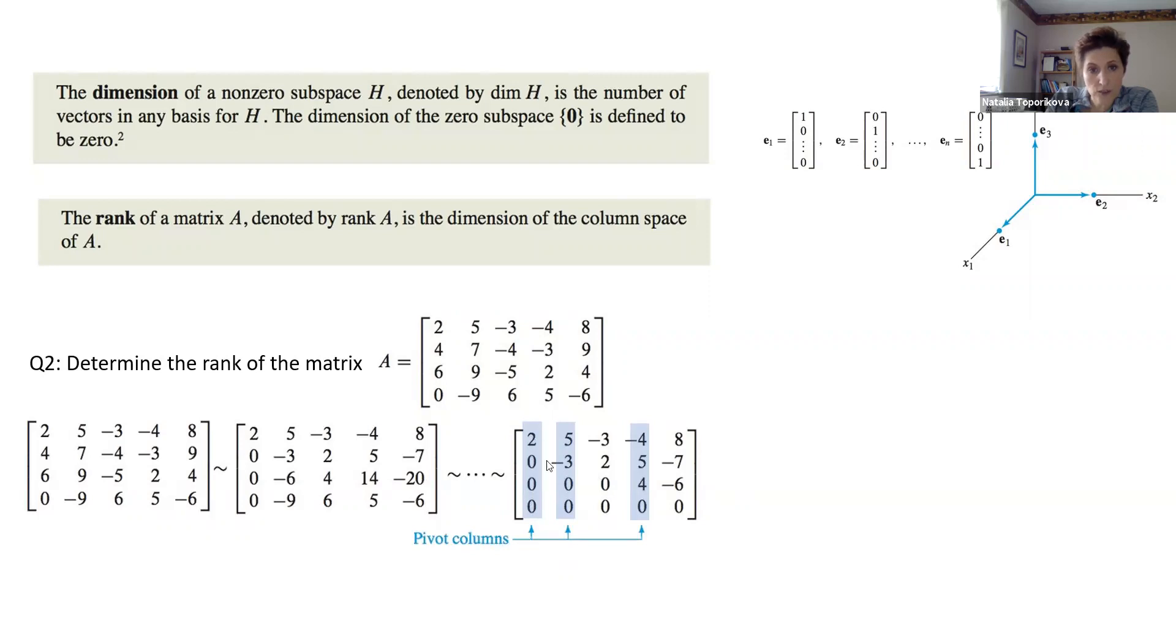It seems like the first, second, and the fourth columns are the pivot columns. The rest of them are not.